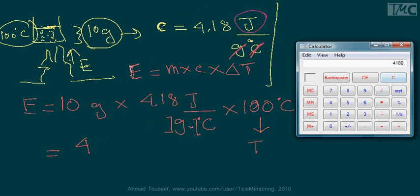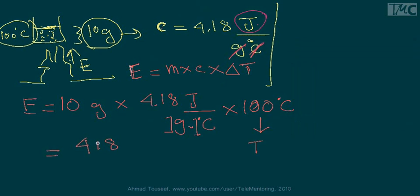4,180 what? Okay, let's see. We have grams and grams that cancel out. That is the reason why I had multiplied C by mass, and we have Celsius—Celsius cancel out.